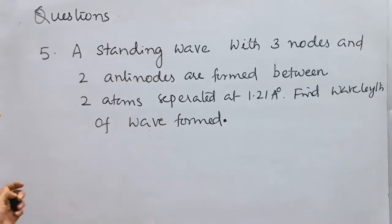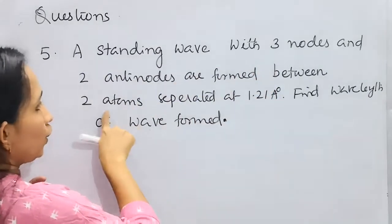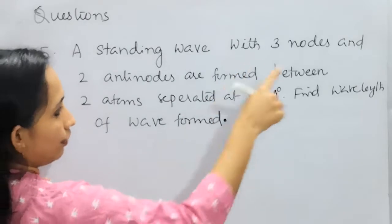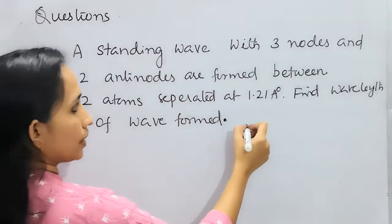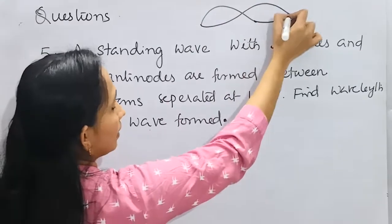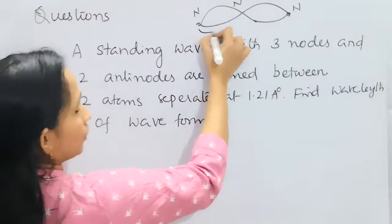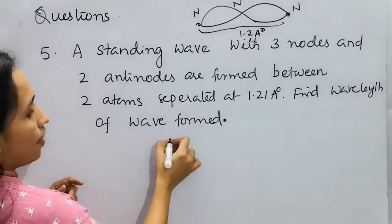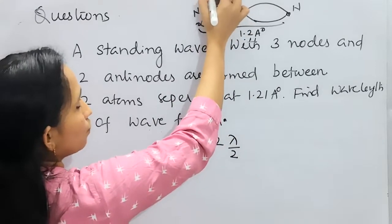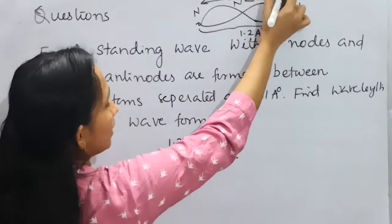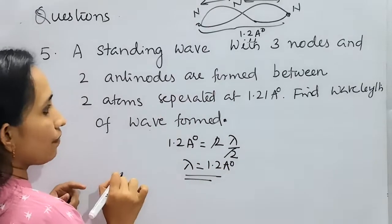Fifth question: a standing wave with 3 nodes and 2 anti-nodes is formed between 2 atoms separated by 1.2 Ångström. Find the wavelength of the waveform. Drawing the pattern for 3 nodes and 2 anti-nodes: 1.2 Å = 2·(λ/2), so λ = 1.2 Å.